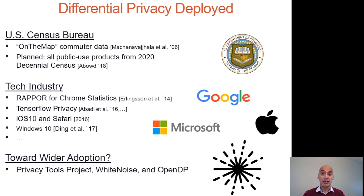Beyond all of this beautiful theory, we have also seen a number of exciting practical deployments of differential privacy in recent years. This includes the landmark decision by the U.S. Census Bureau to use differential privacy for the 2020 census, as well as a number of deployments by large tech companies. All of these, however, are organizations with lots of in-house technical expertise to develop their own customized differential privacy solutions, so a goal of the work we are doing in collaboration with Microsoft is to enable wider adoption of differential privacy.